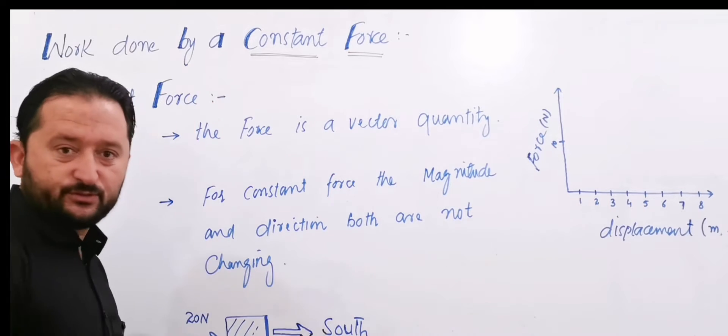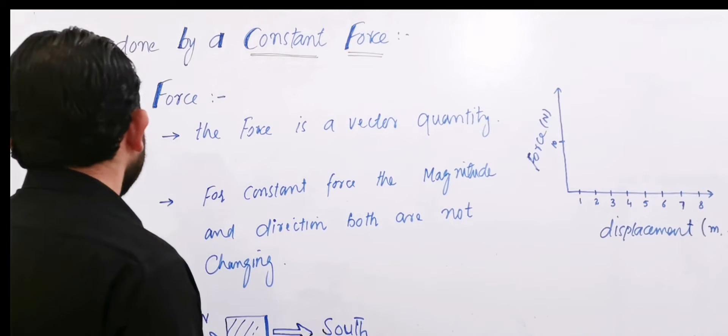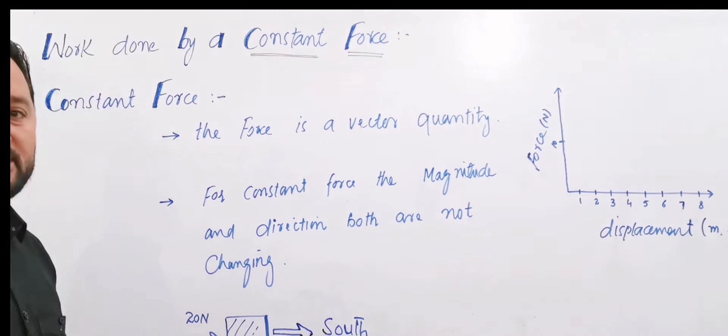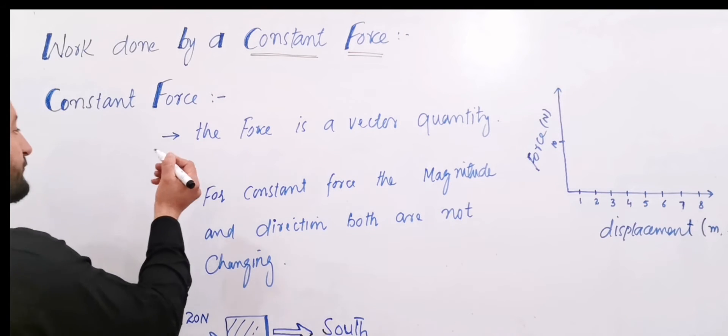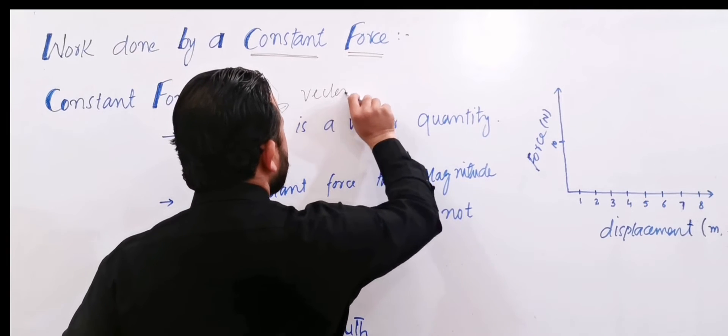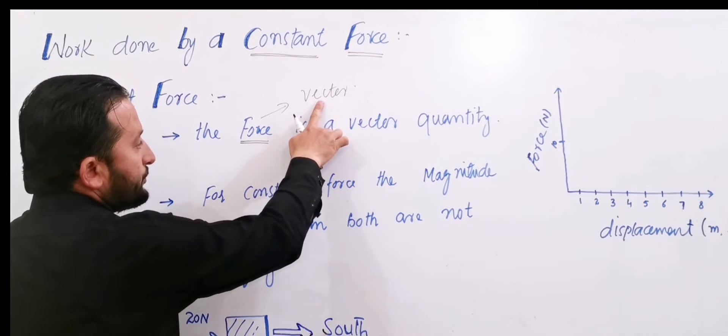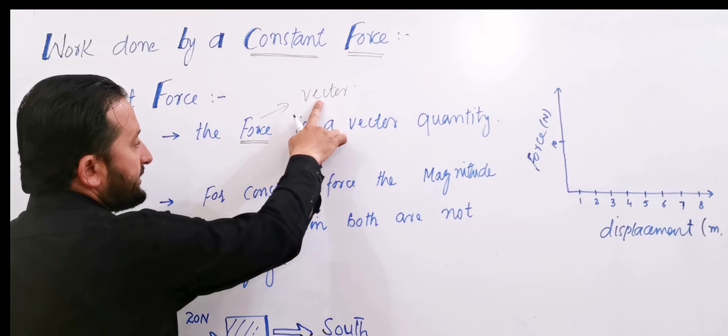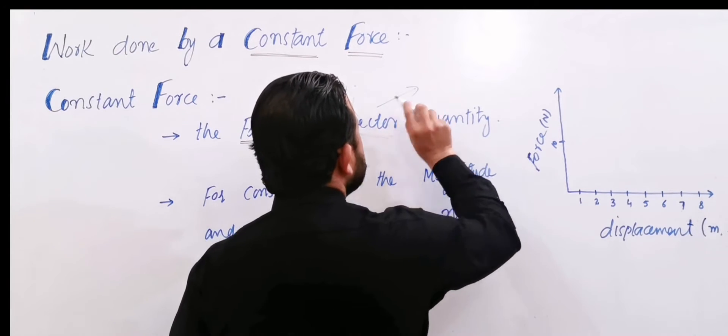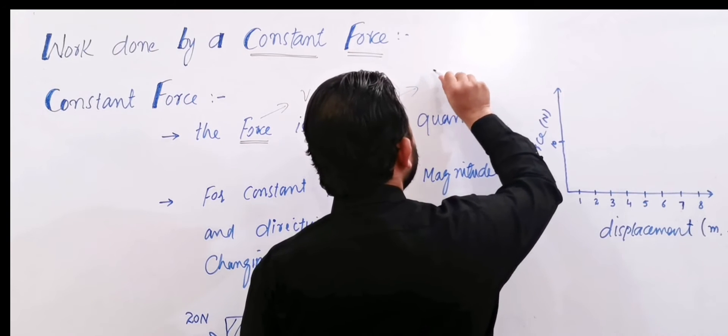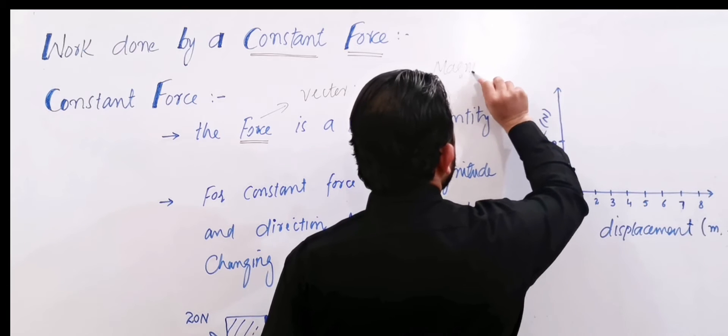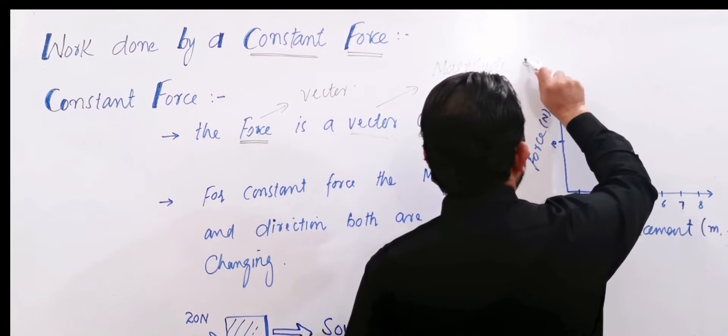First, what is a constant force? Constant force - first you need to keep in mind that force is a vector quantity. Force is a vector quantity. Any physical quantity that can be completely explained with the help of magnitude and direction.